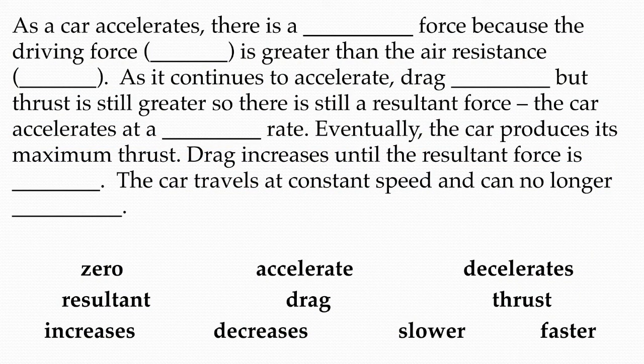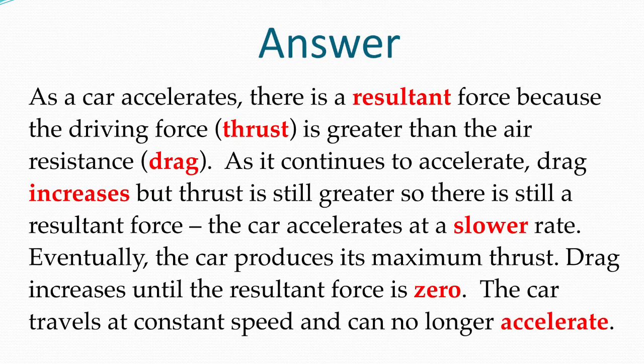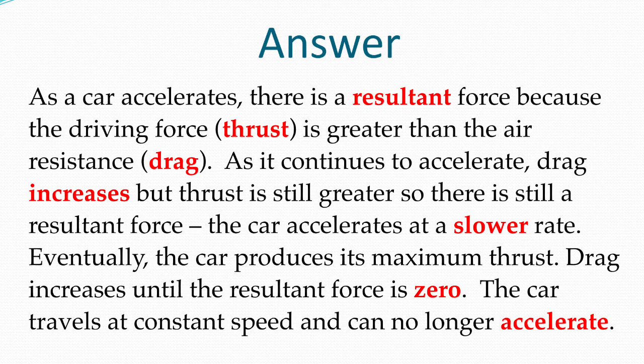I'd like you now to copy and complete this paragraph using the words that are underneath. Don't forget to pause the video whilst you're working through it. And the answer is that as a car accelerates, there is a resultant force, because the driving force, thrust, is greater than the air resistance, drag. As it continues to accelerate, drag increases, but thrust is still greater, so there's still a resultant force. The car accelerates at a slower rate. Eventually the car produces its maximum thrust. Drag increases until the resultant force is zero. The car travels at a constant speed and can no longer accelerate.